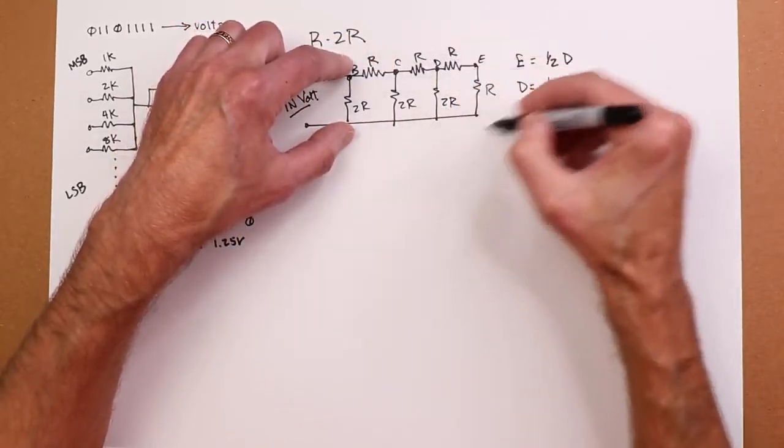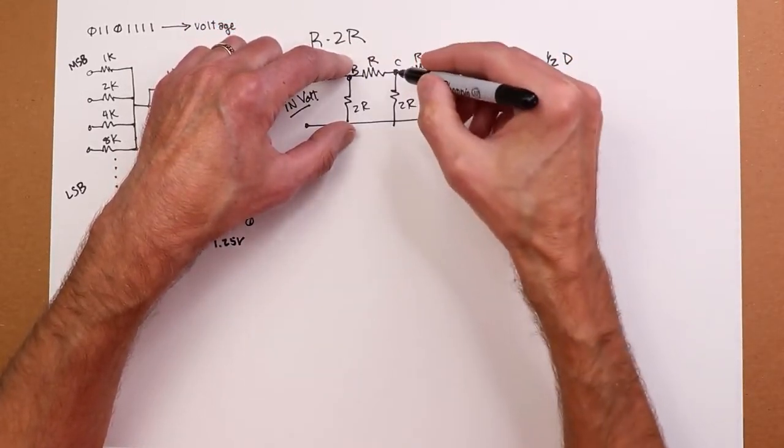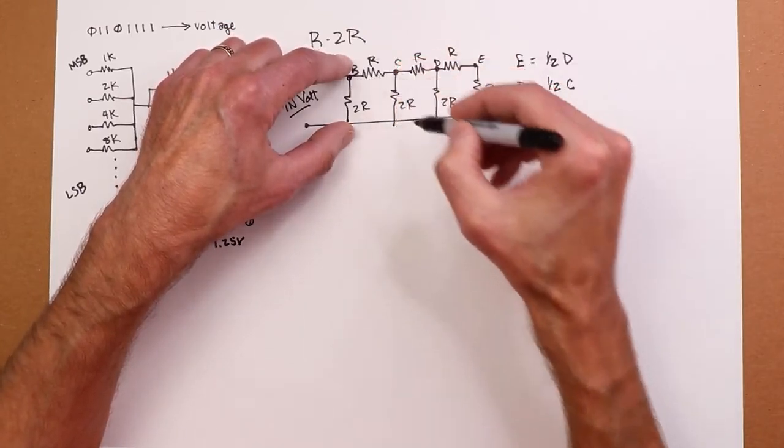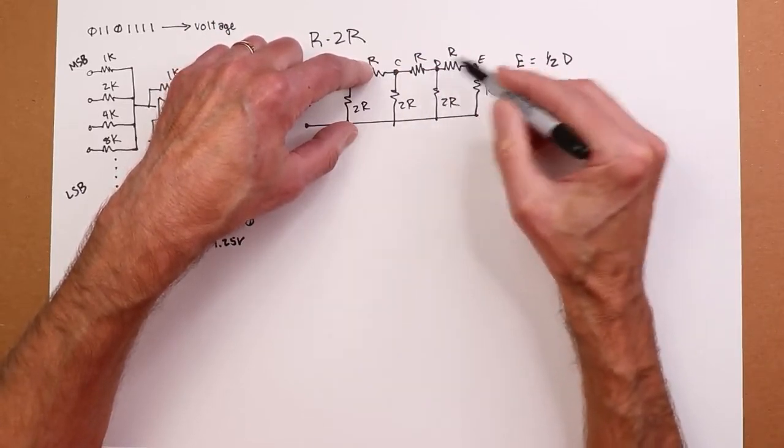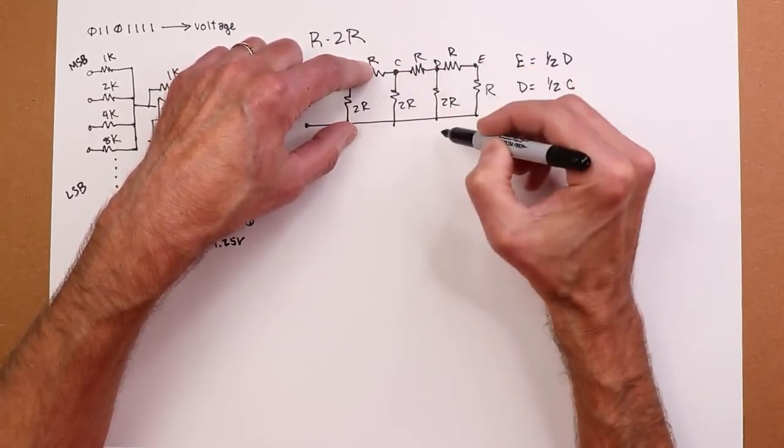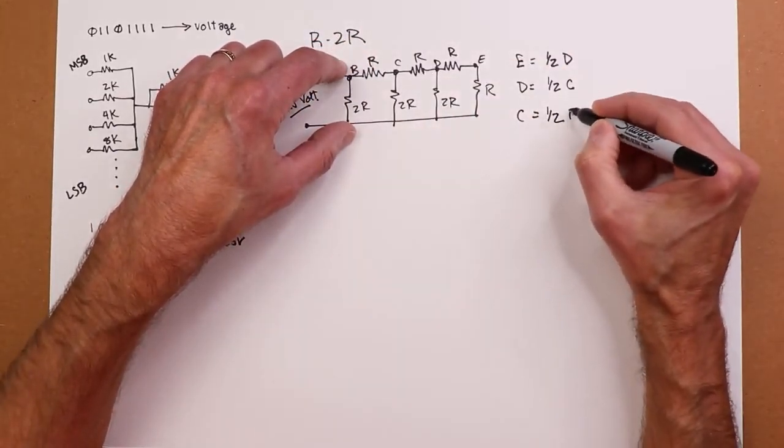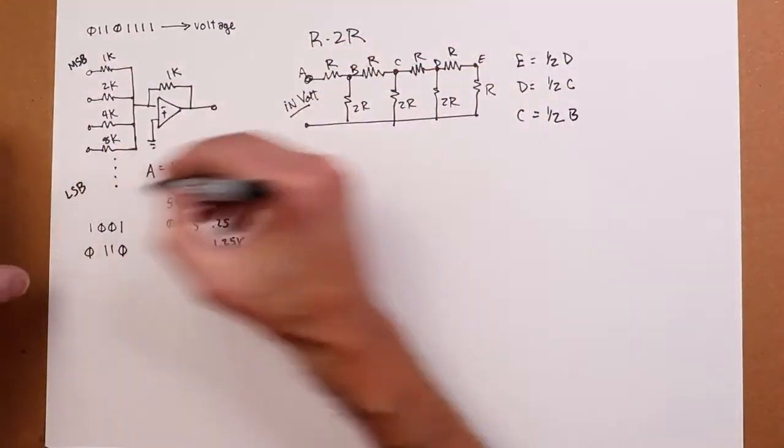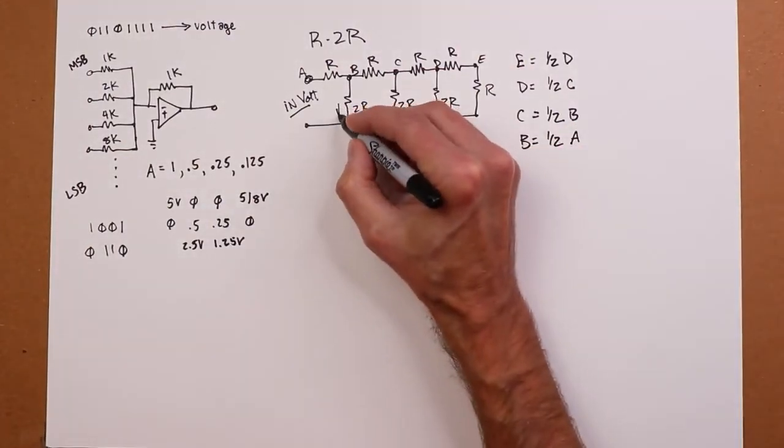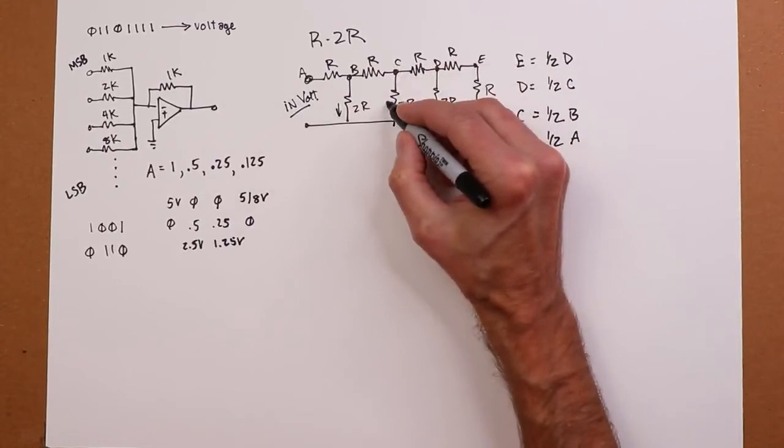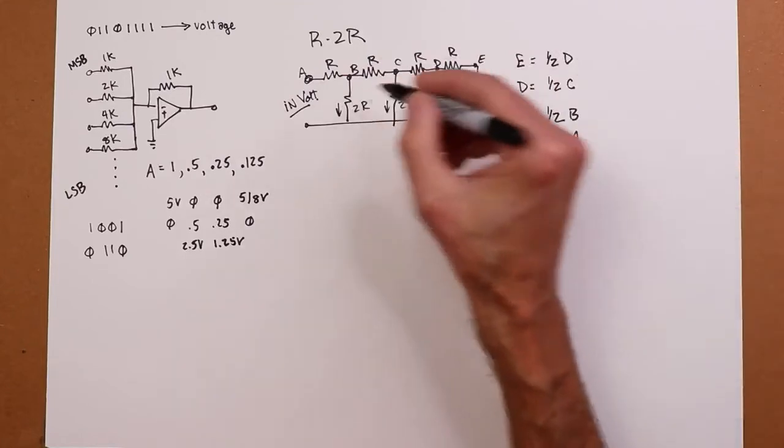So D is one-half of C. Now remember that. This whole thing is R. This whole thing is R. So we move back to C. Well, that's a divider on B, this resistor and this complex. Well, I already know that these equal R. So that's R in series with R, which is 2R, in parallel with this 2R is R again. Hey, it's half again. So C is half of B. And this just keeps on going. So B is going to wind up being half of A.